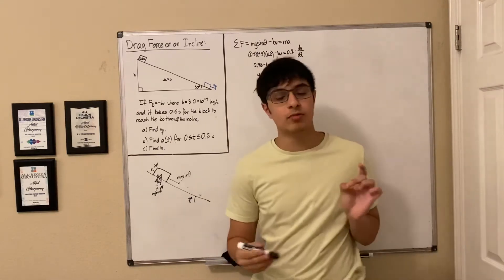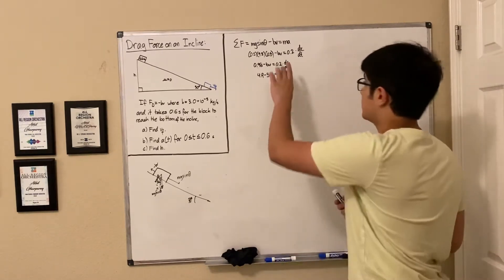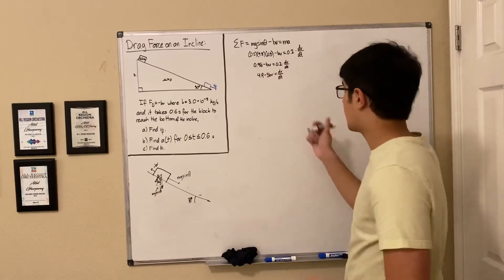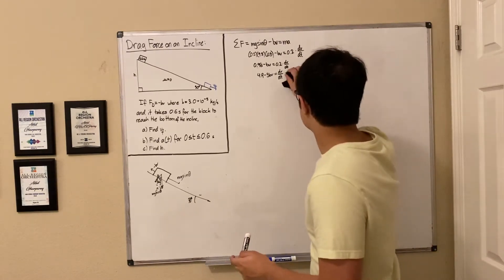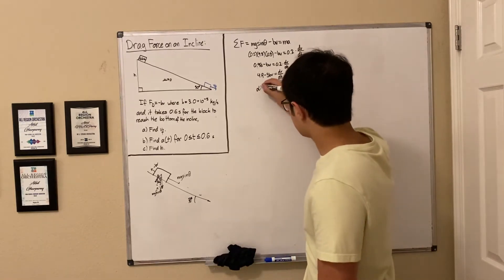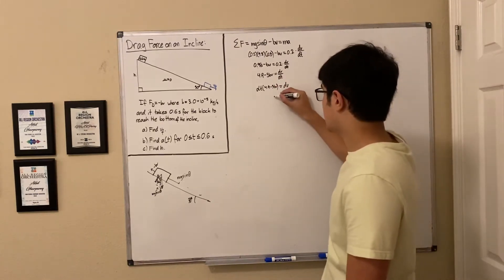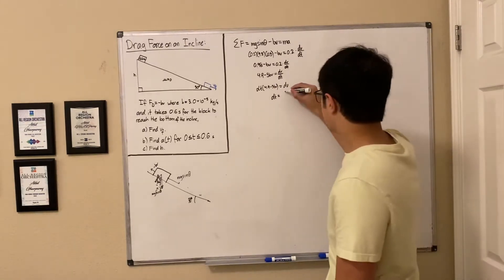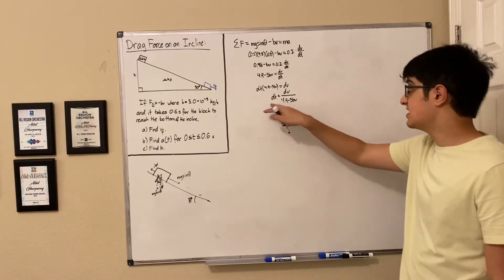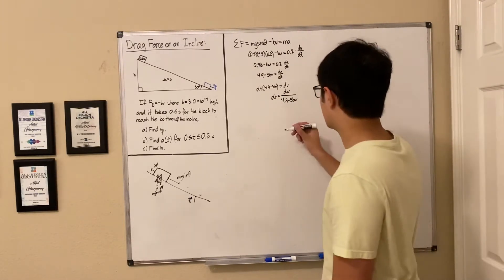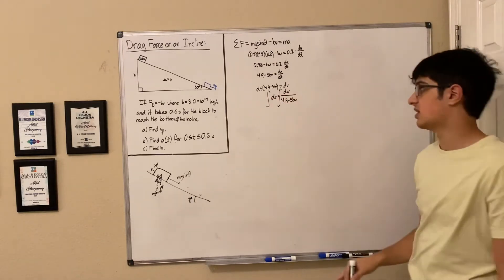To solve this separable differential equation, we multiply both sides by dt to get: 4.9 minus 5BV times dt equals dV. Then dividing both sides by 4.9 minus 5BV gives dt equals dV over (4.9 minus 5BV). To eliminate the differential expressions, we integrate both sides.